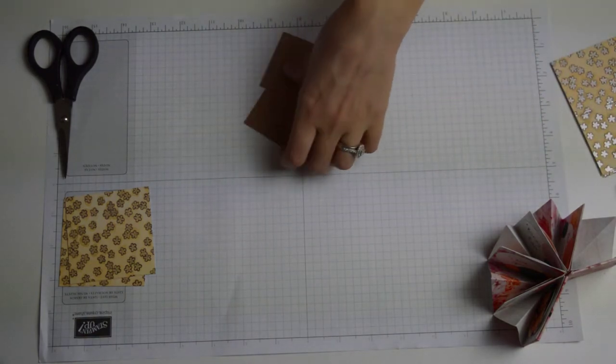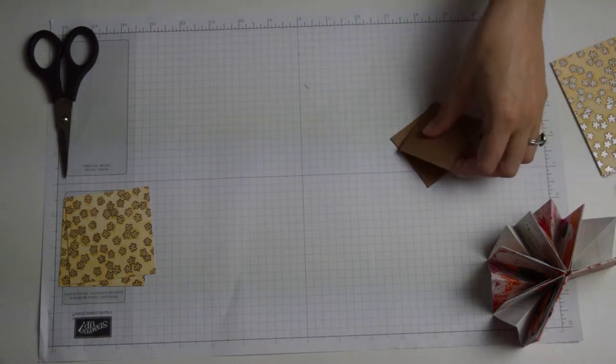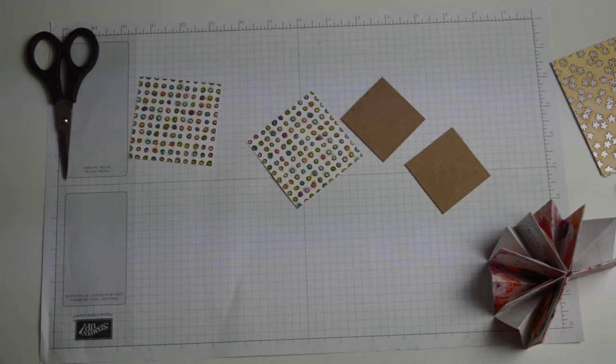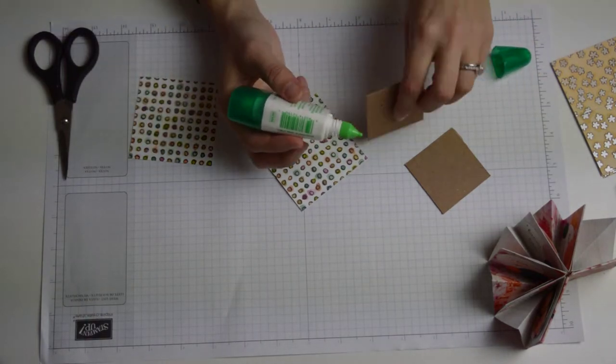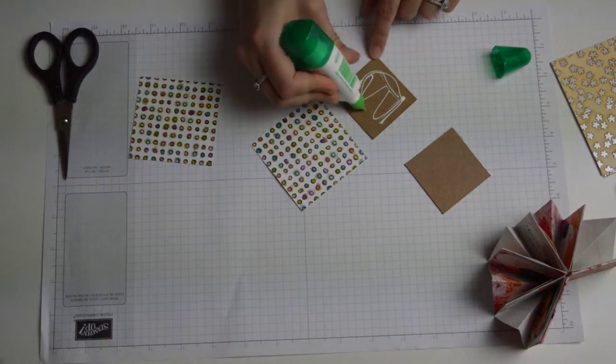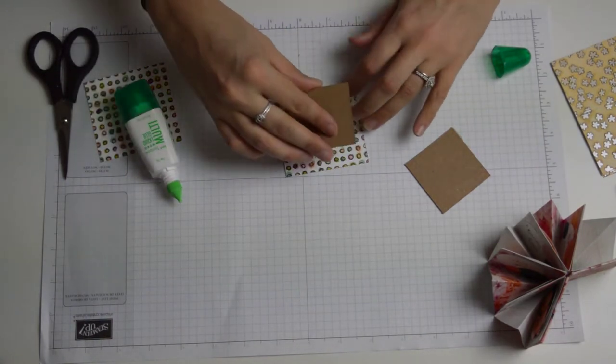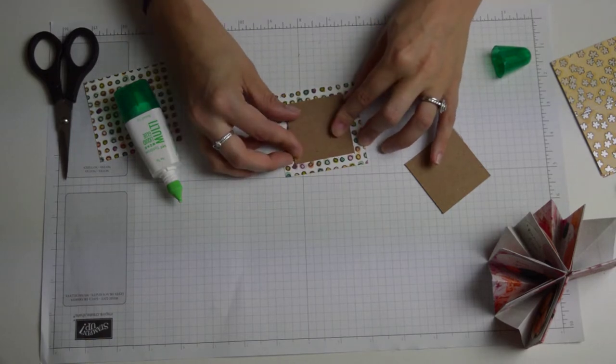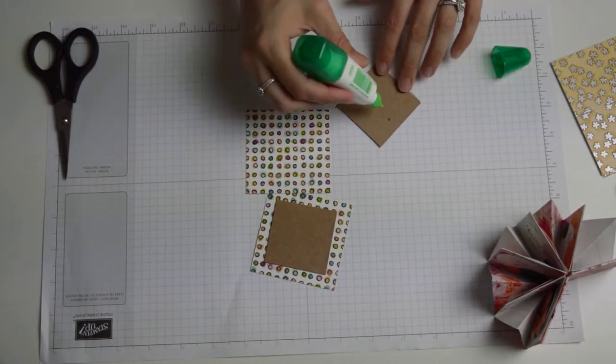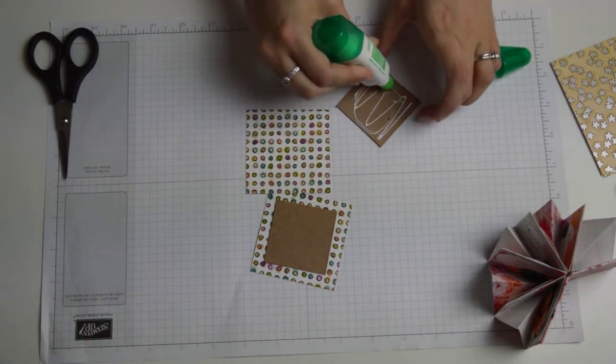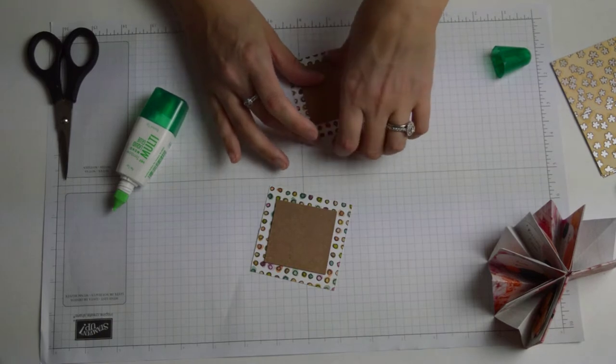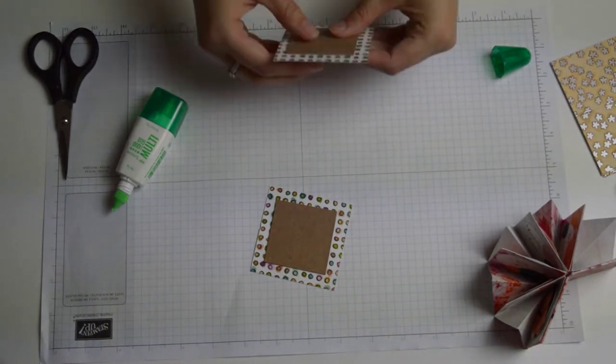What we're going to start with is our binding. We're going to take some liquid glue for this and we're simply just going to adhere the cardboard to the patterned paper. Just nice dollop of glue in the middle. I'm just going to position this as close to center as possible. It doesn't need to be exact but the closer the better. Then we're just going to pop these two aside just to let that glue dry.